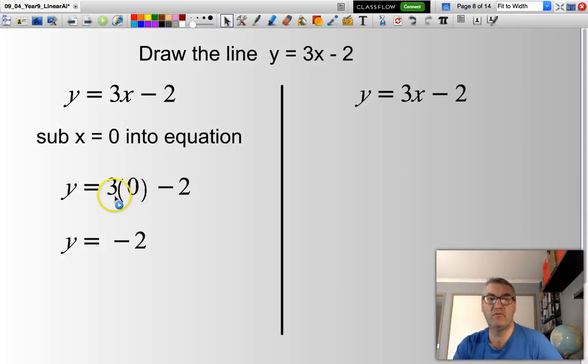Just remember, whenever I have a number or a coefficient in front of brackets, that implies a multiplication is happening. So, 3 times 0 is 0, 0 minus 2 is -2. So, I can say that my first coordinate is (0, -2).